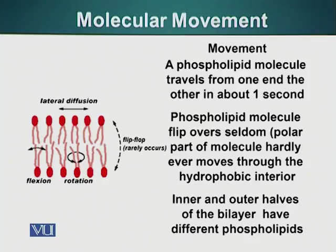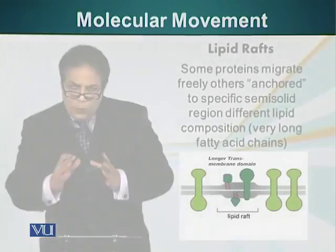For flipping to happen, special protein molecules are needed, because the hydrophilic heads will have to penetrate the hydrophobic part of the lipid membrane in order to flip. Those special proteins are generally called flippases. As mentioned, there are two ways you can fix different proteins in the lipid bilayer.